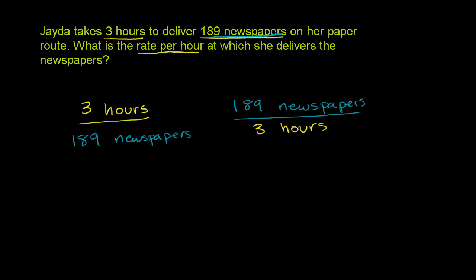Now we want to write it in as simple a form as possible. Let's see if 189 is divisible by 3. 1 plus 8 is 9, plus 9 is 18 — so that is divisible by 3. Let's divide both the numerator and the denominator by 3 to simplify things.